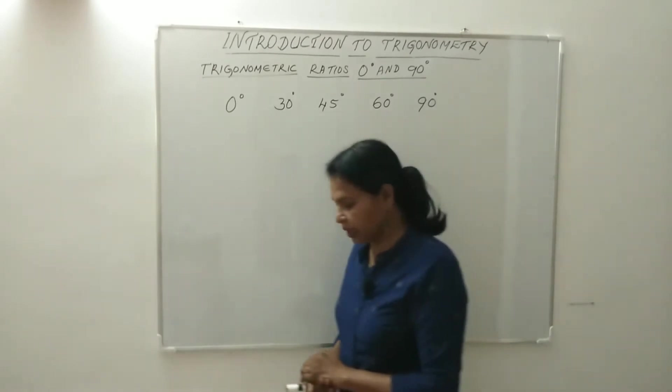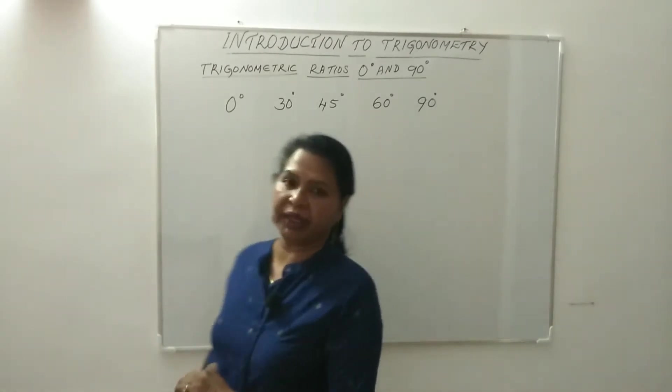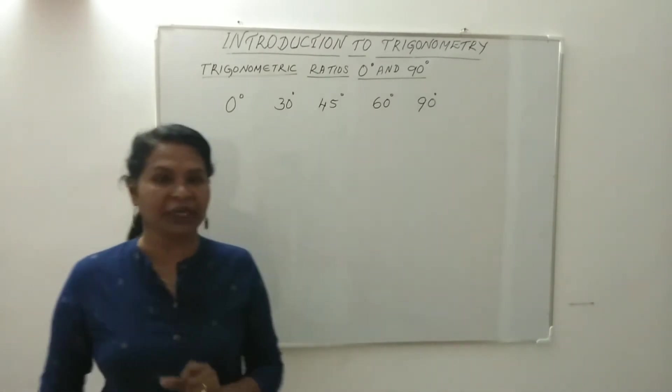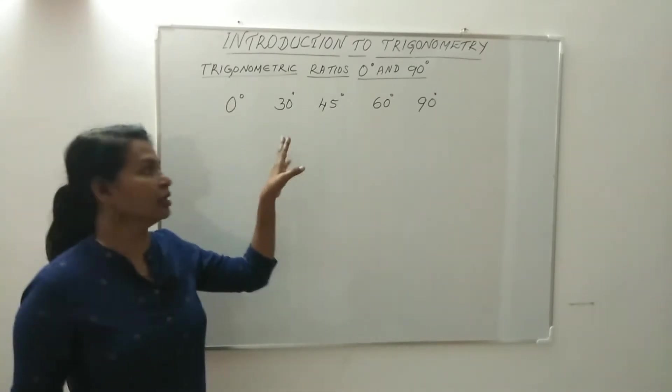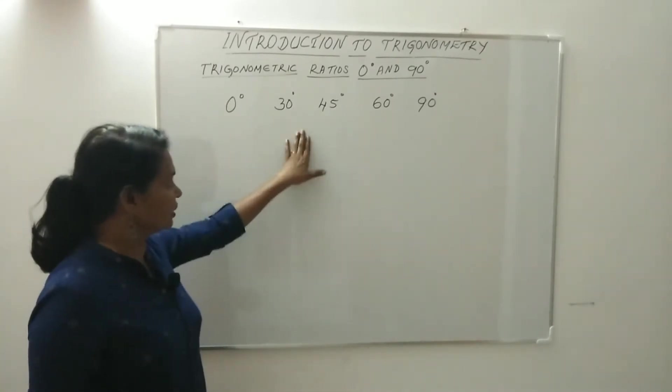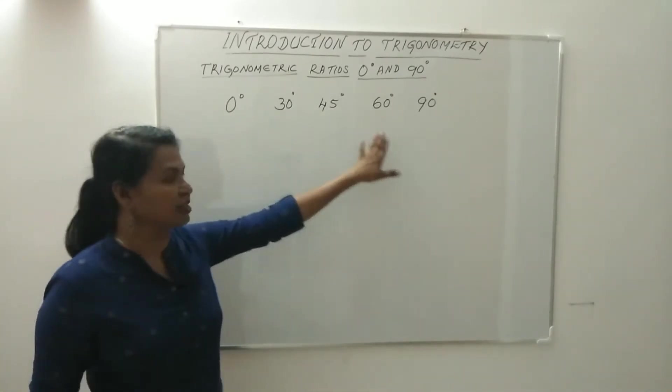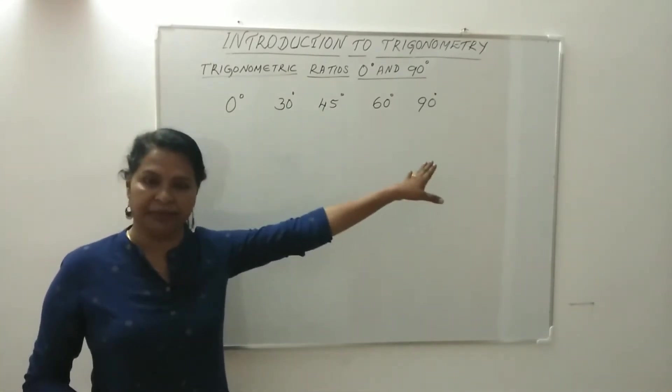Okay, so 0 degrees and 90 degrees. We will go through trigonometric ratios. You will learn the values for 0, 30, 45, 60, and 90 degrees.